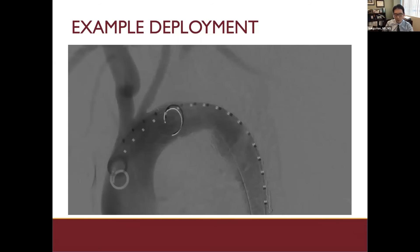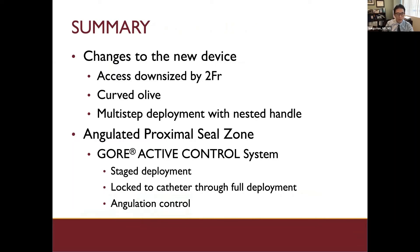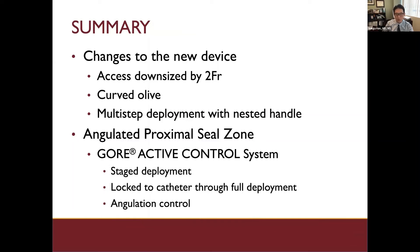This deployment is very controlled and stable, and we really take our time. It is also quite long, so we actually moved away from any hemodynamic manipulations during device deployment. In summary, updates in ActiveControl CTAG include smaller access, curved nose cone, multi-step deployment, and the ActiveControl features give us tools to maximize our proximal seal zone — really useful in angulated anatomy in our experience.